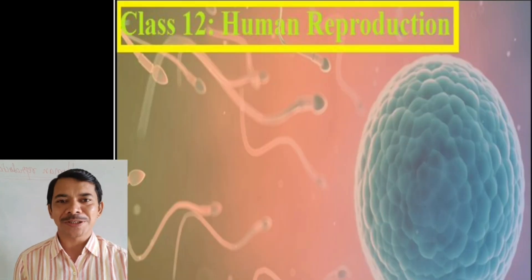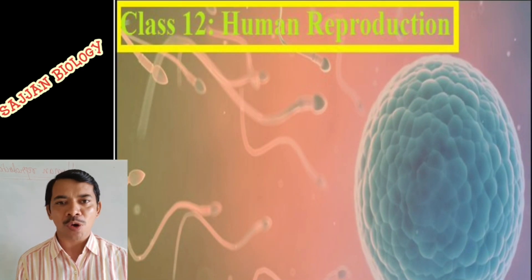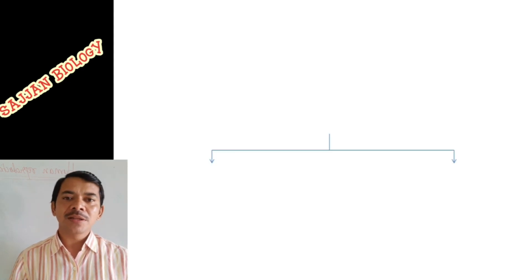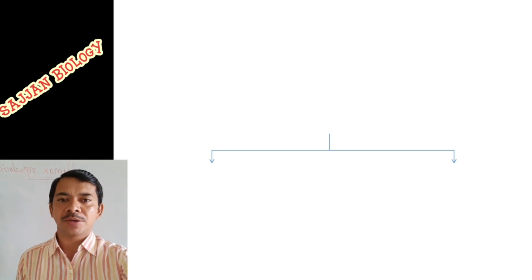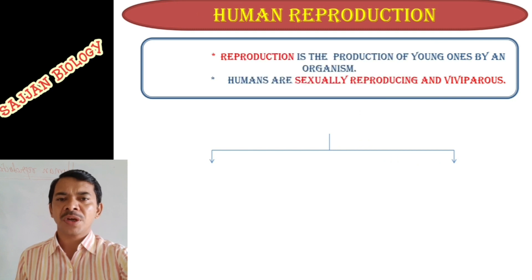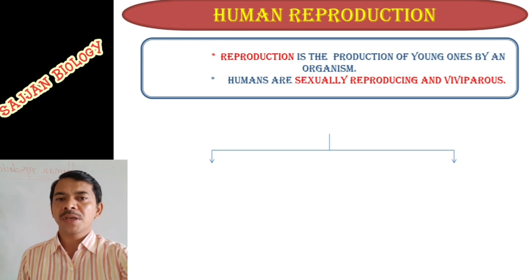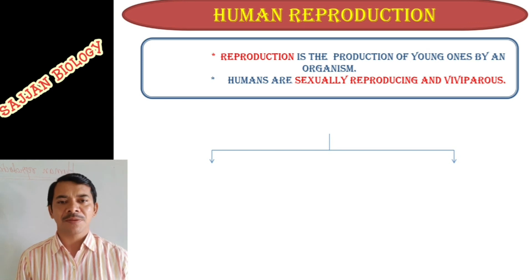Welcome back to biology class. Today we are discussing a new chapter called Human Reproduction. In this session we are going to discuss in detail about the male reproductive system. Reproduction is nothing but the production of young ones by an organism, and humans are called sexually reproducing organisms and are also called viviparous organisms.